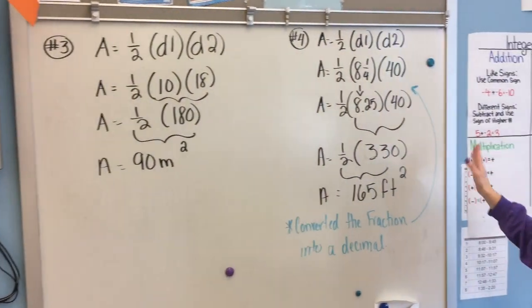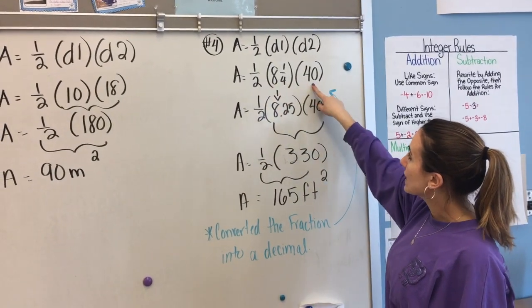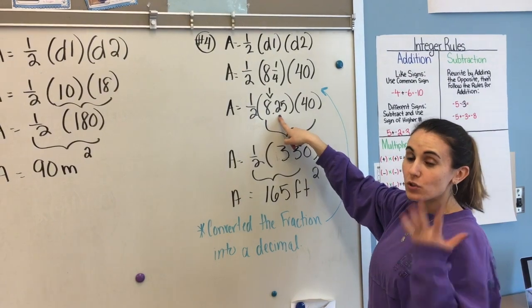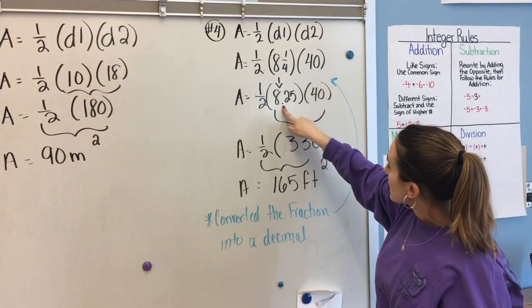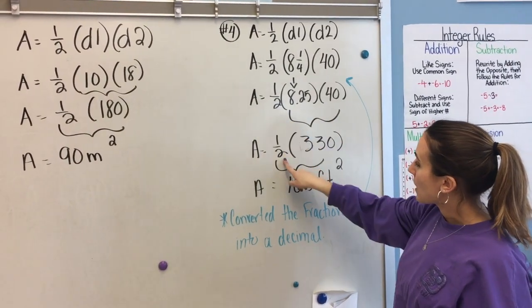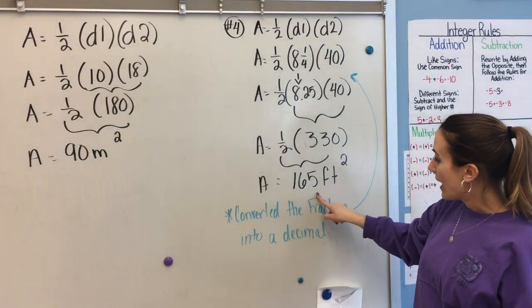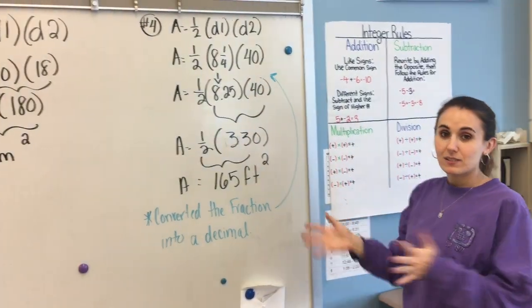And for number 4, we had a fraction. I'm going to plug in 8 and 1/4 and 40. I decided to make my fraction a decimal. I like decimals a little better. If you decided to keep it as a fraction, that's perfectly fine. So what I did was I did 8.25 times 40. It got me 330. I brought down my half. So half of 330 is 165 feet squared. And here's my little note that I converted it in case you forgot what I did.